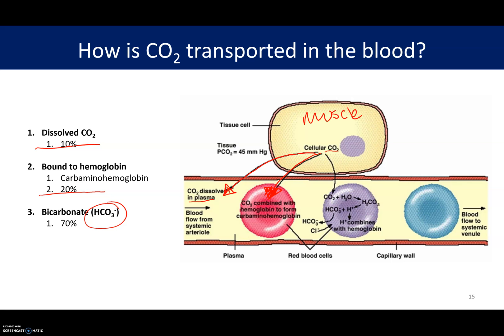The third most important way is that the CO2 will dissolve out and when it gets into the blood it makes its way onto the red blood cell. In the red blood cell there's an enzyme called carbonic anhydrase that will help convert the CO2 into bicarbonate, or HCO3 minus.